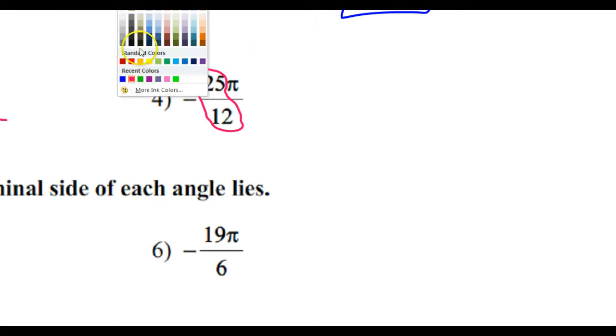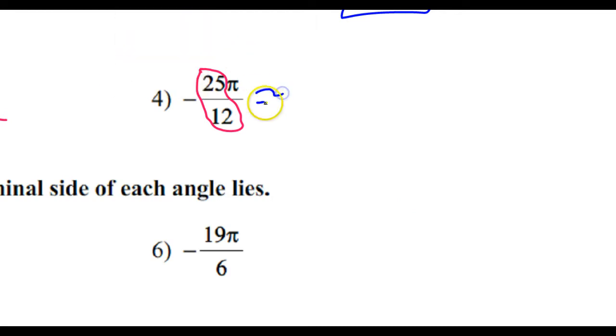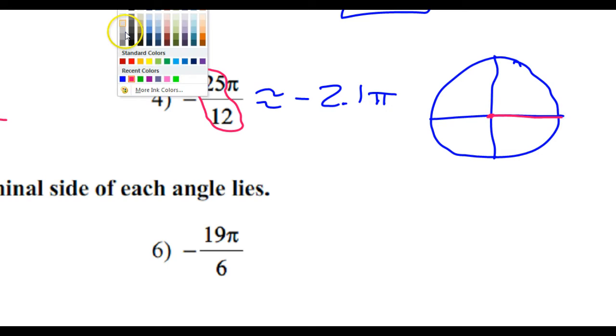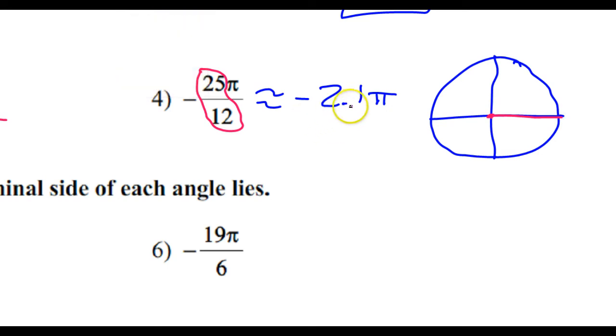Okay, so this is approximately -2.1π. Let's draw a picture of it and find the quadrant. It's negative, so that means I will be traveling clockwise. Let's start off with our standard position right here.